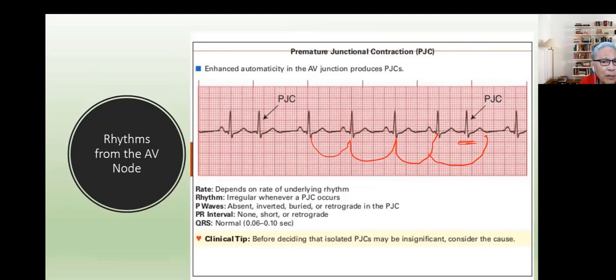And because the premature beat does not have a P wave, what do we baptize that then? We baptize that as a junctional beat. That is a premature junctional or premature nodal contraction. They're one and the same terms.